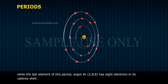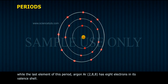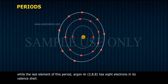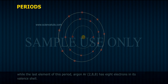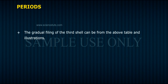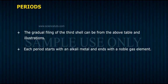While the last element of this period, argon, Ar-2-8-8, has eight electrons in its valence shell. The gradual filling of the third shell can be seen from the above table and illustrations. Each period starts with an alkali metal and ends with a noble gas element.